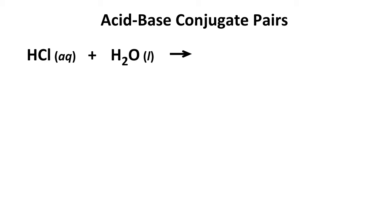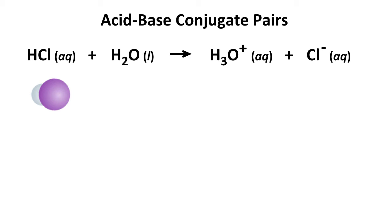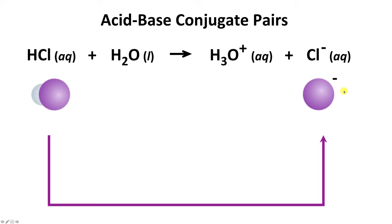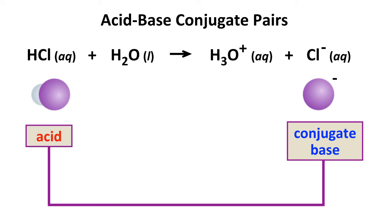To do that, we'll introduce the concept of acid-base conjugate pairs. Looking at HCl in aqueous solution: HCl with H2O makes H3O+ and Cl-. On a molecular level, HCl — a hydrogen atom bonded to a Cl atom — dissolves in water, the H and Cl break apart, producing Cl-. Notice that HCl and Cl- differ only by an H+. HCl is an acid because it donates an H+ to H2O to make H3O+. The Cl- produced is called the conjugate base of HCl.